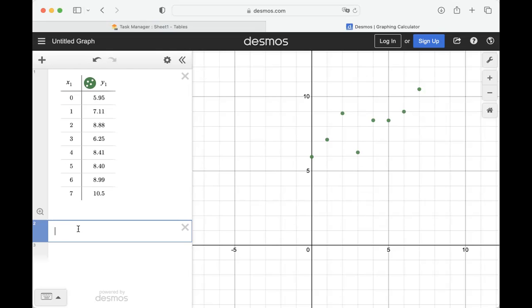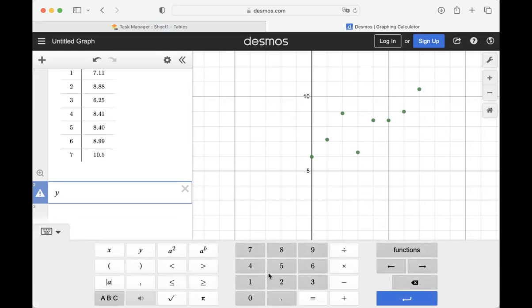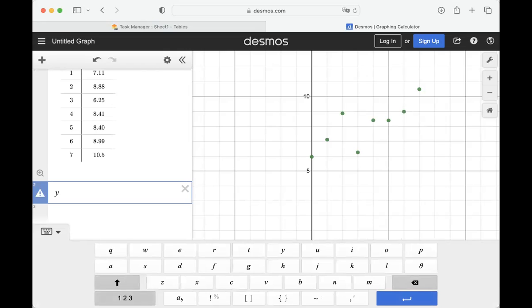You can do line of best fit for lines or different shapes. I'm going to do the basic slope intercept form. Instead of an equal sign, you use the little squiggly line. Click on ABC, there's a squiggly line down here on the bottom row, and then it's MX plus B.